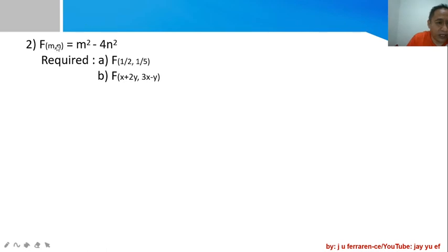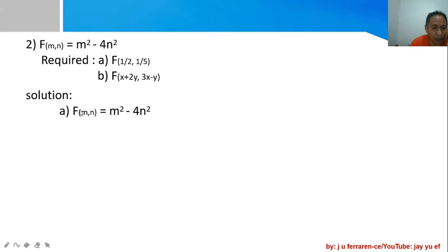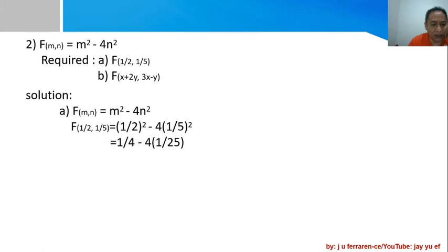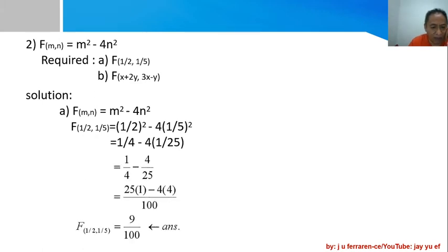In number two we deal with a function involving two independent variables m and n: f(m,n) = m² - 4n². In part a you are required to find the function value when m = 1/2 and n = 1/5. Substituting: (1/2)² = 1/4 for the first term, and 4 times (1/5)² = 4 × 1/25 = 4/25 for the second term. So we have 1/4 minus 4/25.